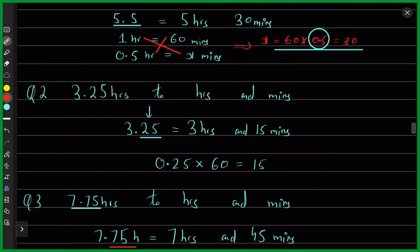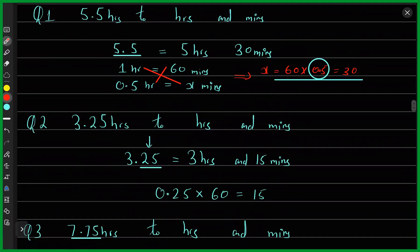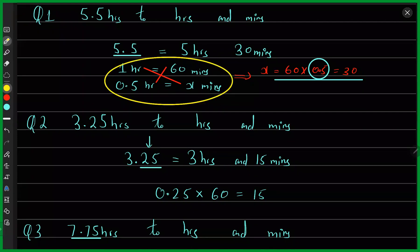The examiner would not give you marks for showing the ratio working alone — he would only give you marks for the correct answer. These questions come for a mark or two. So you can directly multiply by 60 or use the ratio method. Both would be correct.